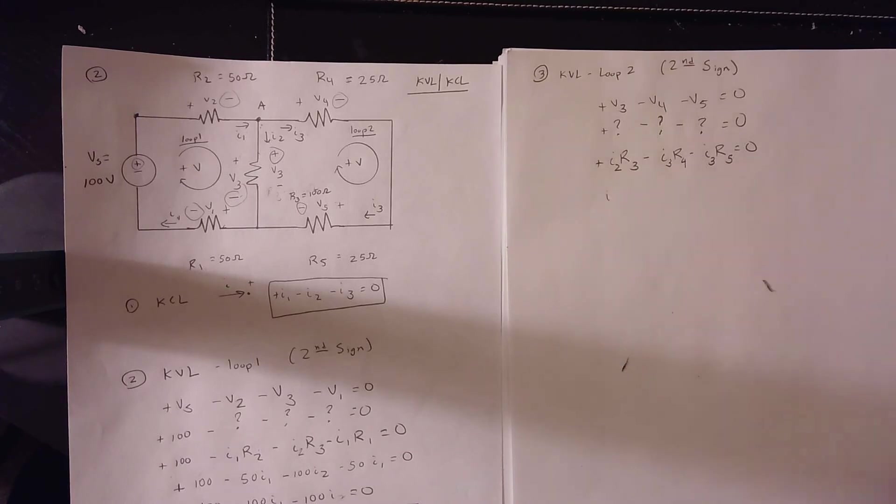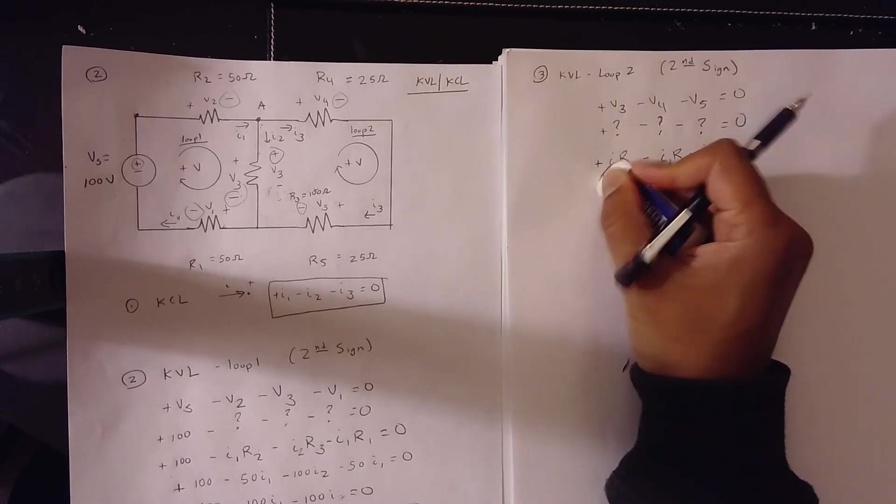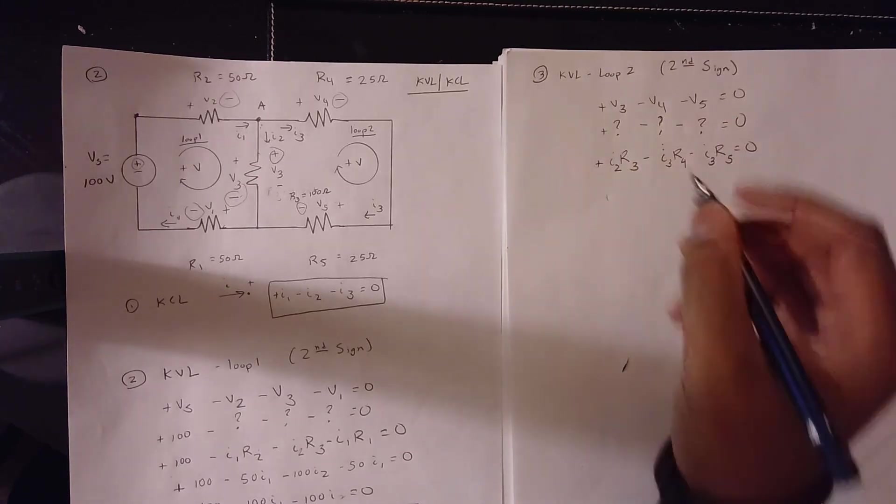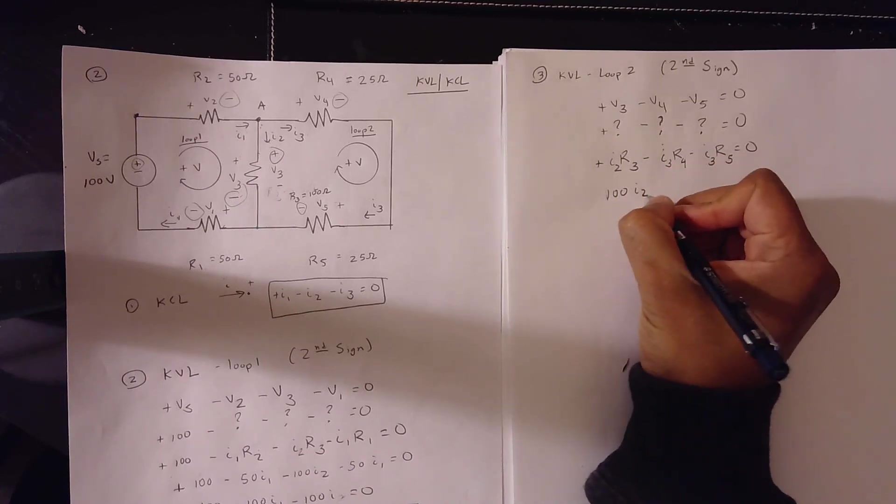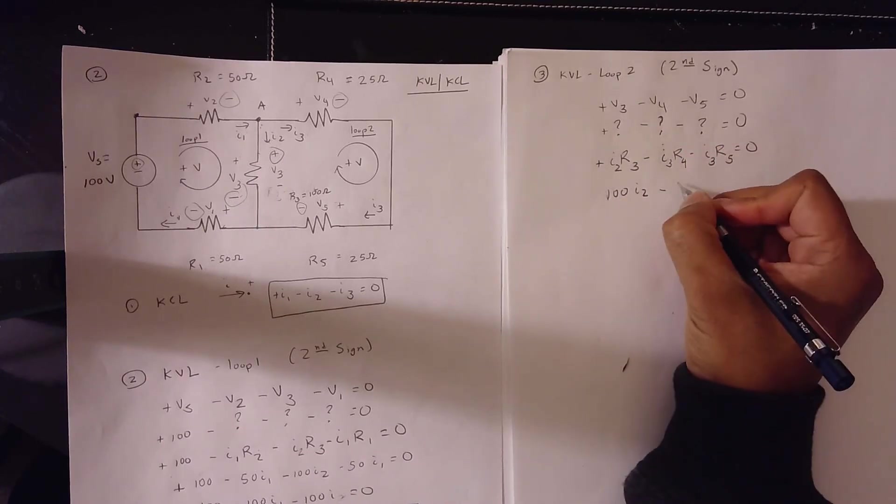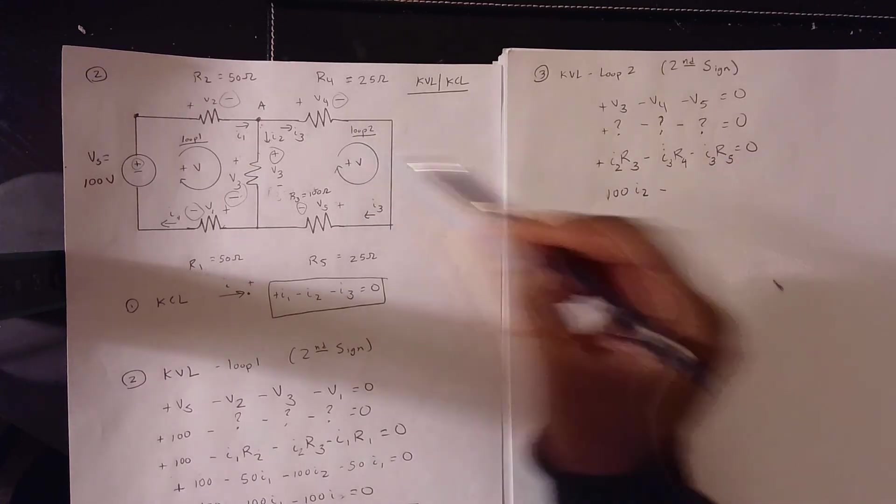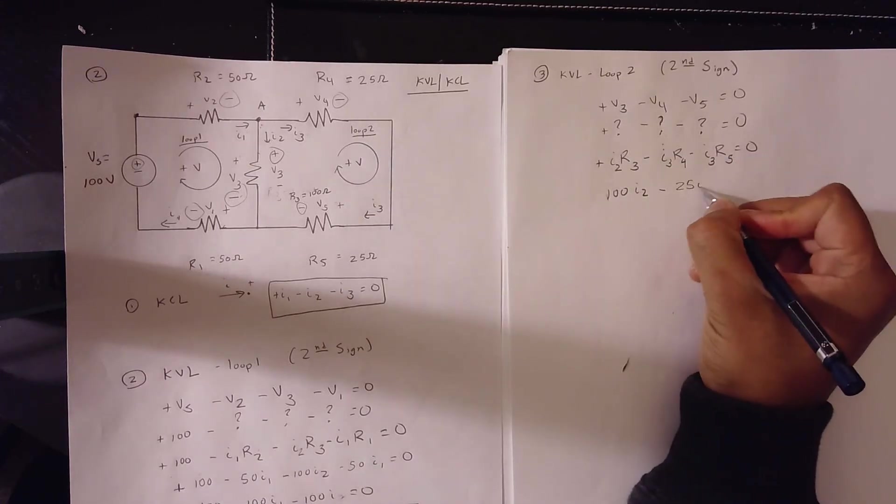So, what is R3? R3 is 100. So, our equation comes out to 100 I2 minus R4 is 25.